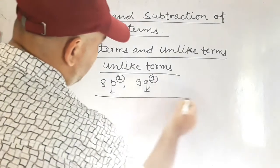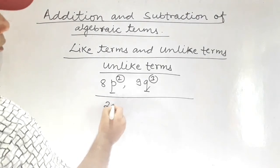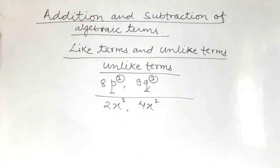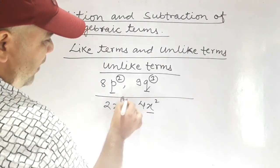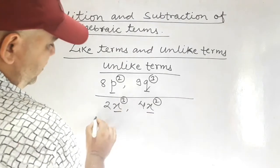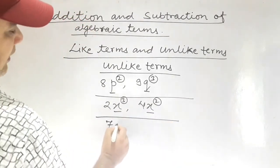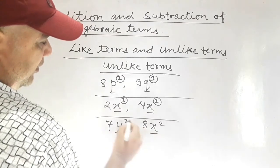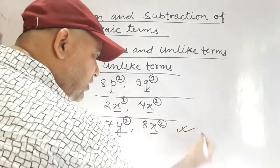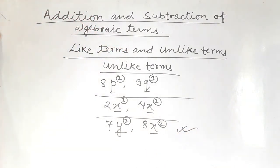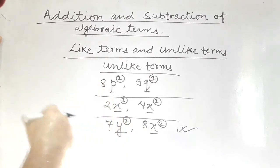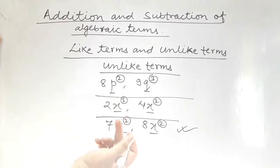Let's take more examples. Here, 2x power 3 and 4x power 2 are also Unlike Terms. Although the bases are the same, the powers are different. Another example: 7y power 2 and 8x power 2. Here the bases are different but the powers are same — they are also Unlike Terms. So it is not necessary that both base and power should be different. Either the base or the power should be different, or both can be different.